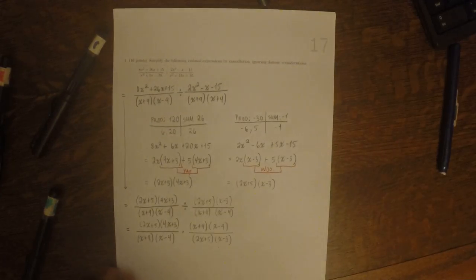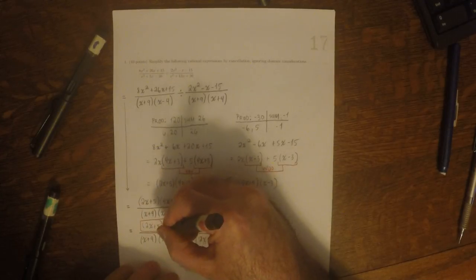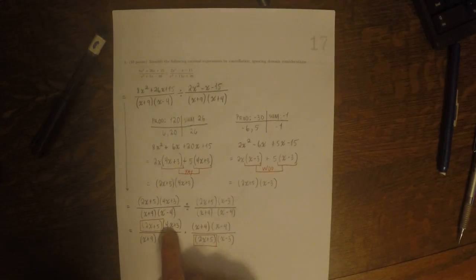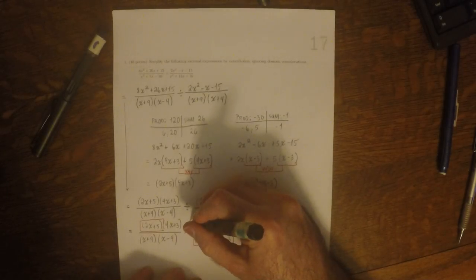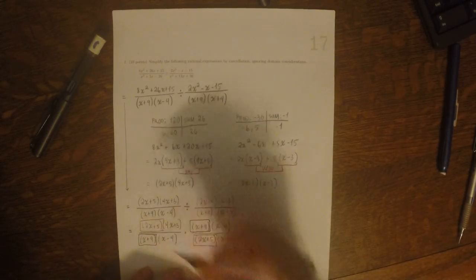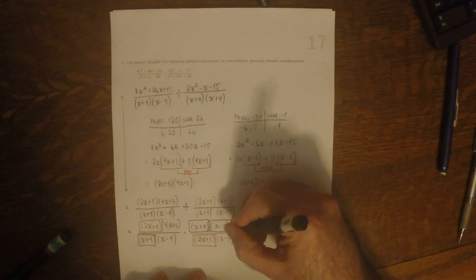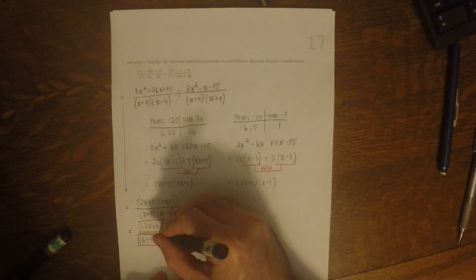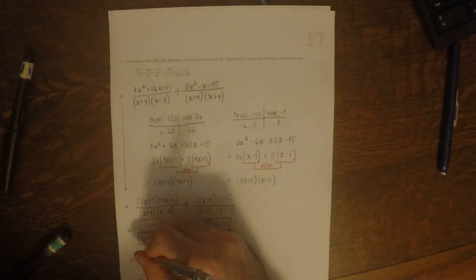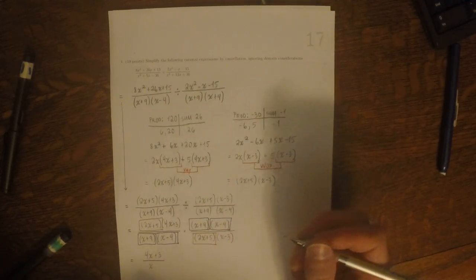Now we want to cancel, ignoring domain issues. This 2x plus 5 pairs off with the other 2x plus 5 — they cancel. Nothing cancels with the 4x plus 3. This x plus 9 can pair off with the other x plus 9 and they cancel. And this x minus 4 can pair off with the other x minus 4 and they cancel. The result is 4x plus 3 divided by x minus 3.